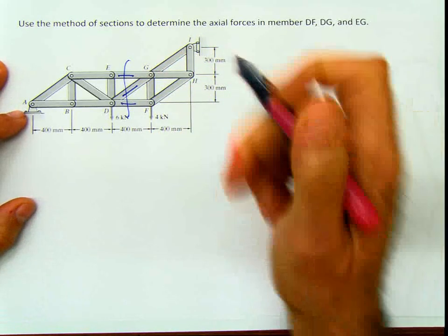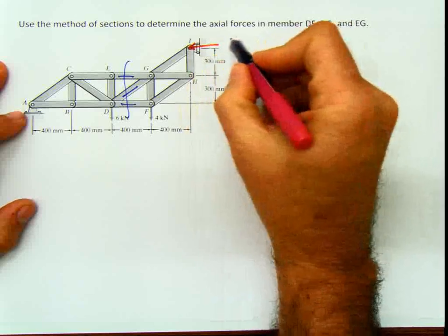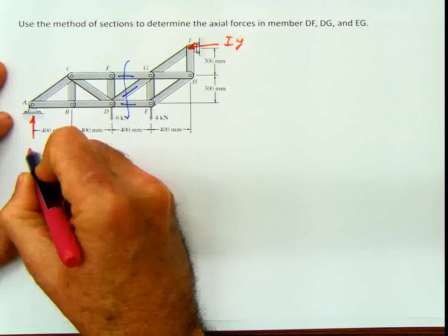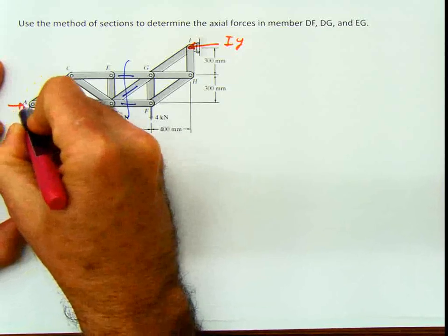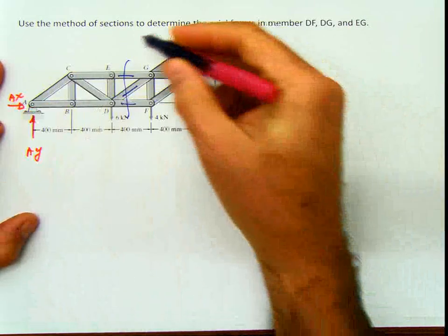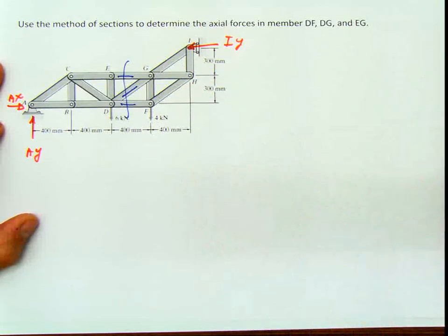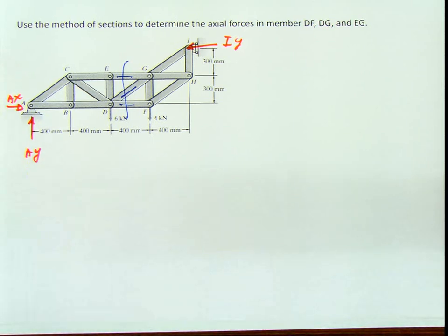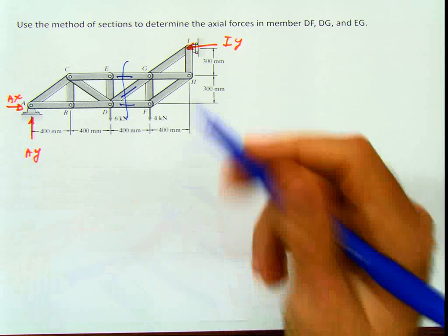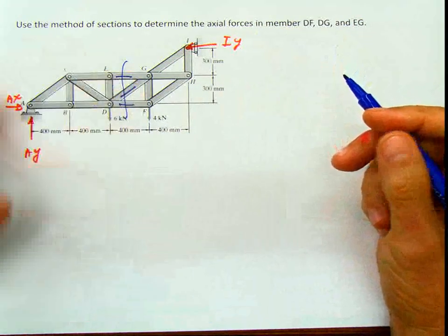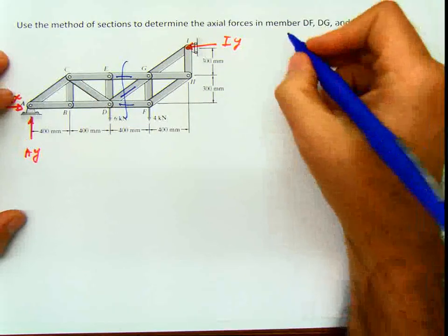Originally, I need to calculate the reaction Iy, and I have to calculate the two reactions Ay and Ax. Then I do this section. My personal choice is to use this side, but you can also use the other side. So let's first calculate the reactions.